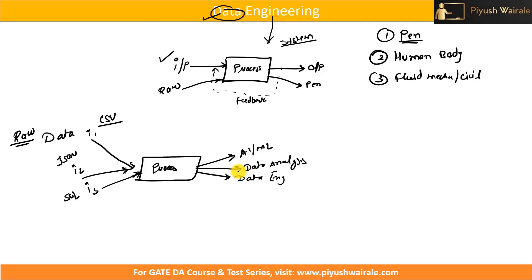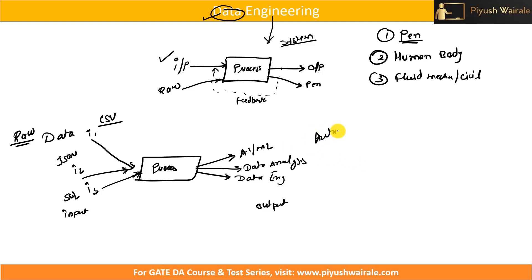All those are inputs, all those are outputs, and we can do multiple processes. This output can be considered as input for another process, and again that output can be used for further applications. In short, this entire input-process-output is basically engineering, and if the input is data then it is data engineering. We can automate this process — automatically fetch data from multiple sources, do some process, and provide analytics or some output.